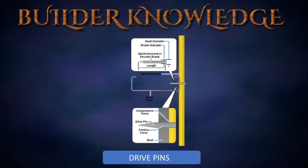Drive pins are used to fasten panel sheathing to metal framing for walls, floors, or roofs. They are driven by pneumatic nailers and are made of heat-treated high-carbon steel. They have grooves or knurls on the shanks to draw the pins tight when driven. As a pin is driven, the point penetrates the sheathing and bores through the steel, pushing the steel outward, which then compresses and grips the pin.